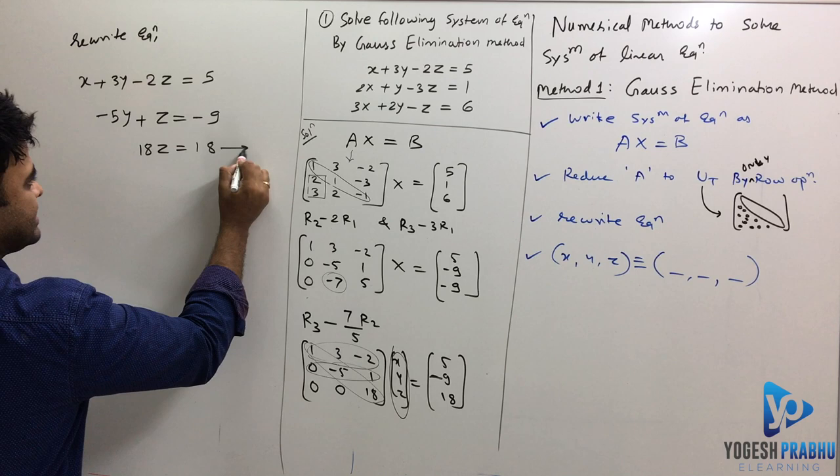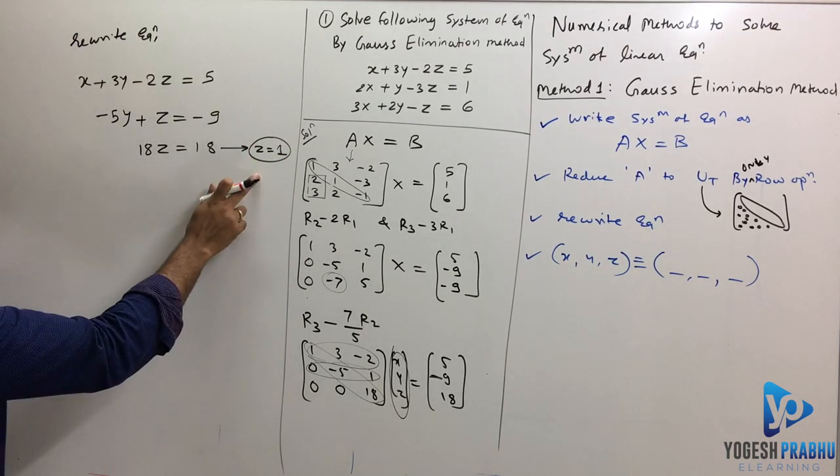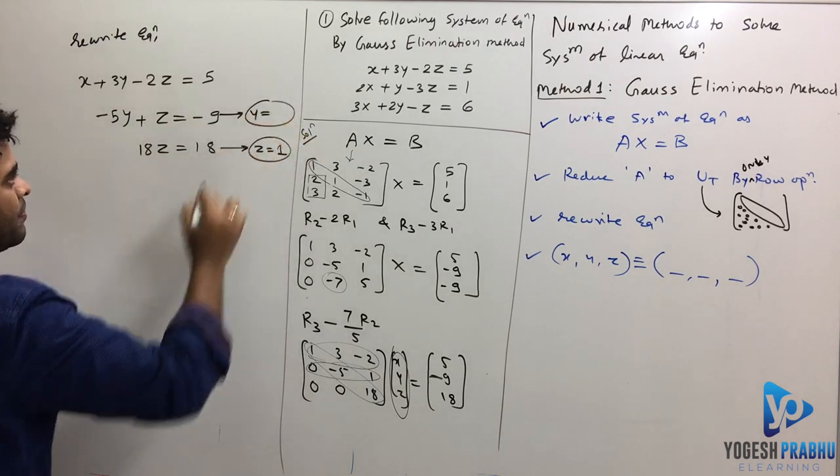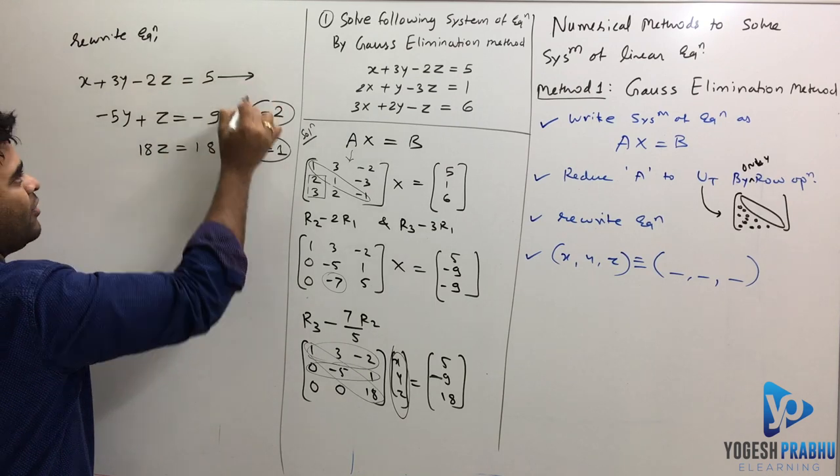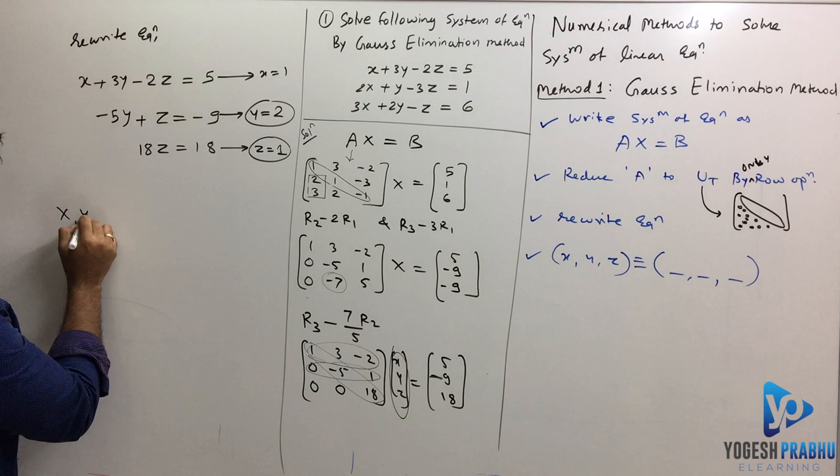Now, from this equation, I can clearly see z equals 1. Now you put z equal to 1 over here. And from here, you'll get y equals 2. And put z and y over here, you'll get x equals 1.